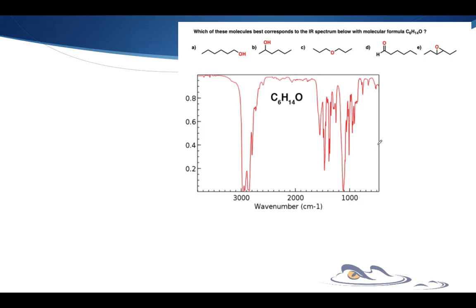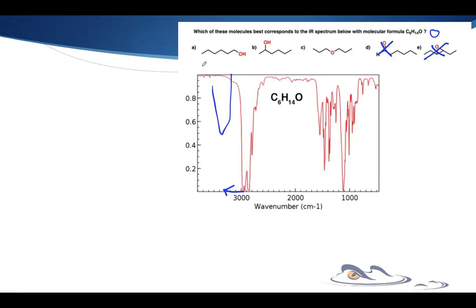How did that go? Were you able to eliminate the ones you needed to get to the right answer? Looking at this: 6 times 2 is 12, plus 2 is 14, minus 14 — this has a hydrogen deficiency index of 0. That means there are no unsaturations, no pi bonds, no rings. Since there is no pi bond, I'm not even going to look for a carbonyl group — and you'll notice it's missing. The other thing that's missing — looking on this side of 3,000 — I do not see any tongue sitting there. So there is no hydroxyl group. That gets rid of two options and brings it to C. C is our answer.